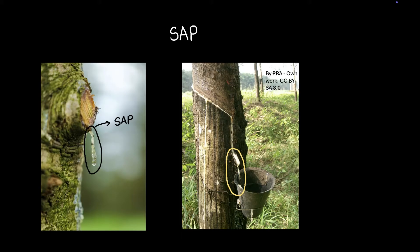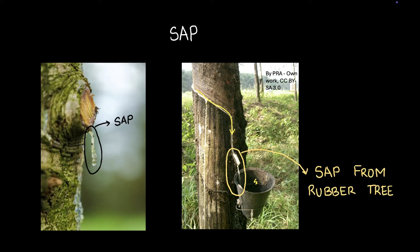The rubber tree is planted in large numbers. We make small cuts for the sap to flow out and into a collection bucket. This white sap from the rubber tree is also called latex — you may see that word in your textbooks.